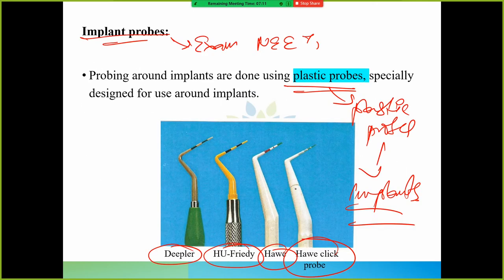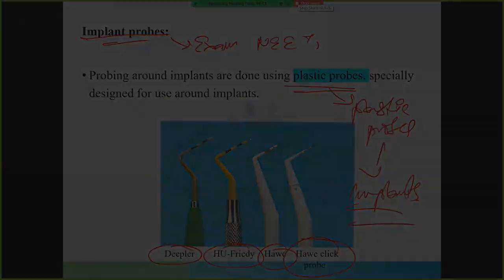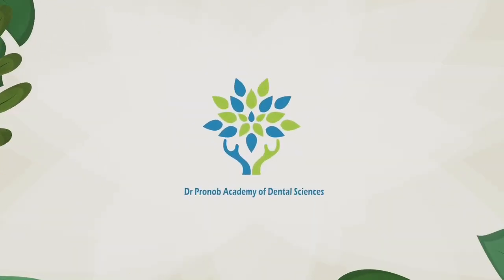Conclusion: Next class we will talk about explorers, Gracey curets, universal curets, and whatever surgical instruments remain. We will try to finish in one more class. If it doesn't finish in one more class, then we'll take two classes. So we will stop here for today.